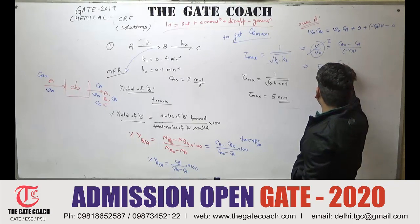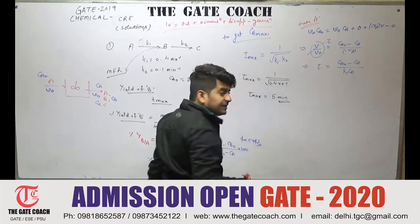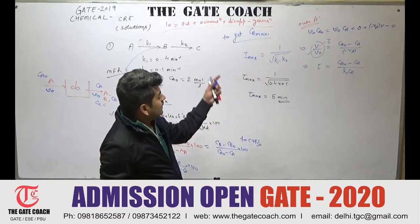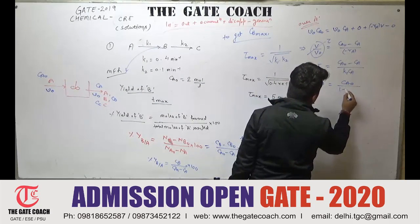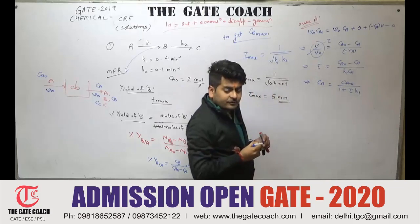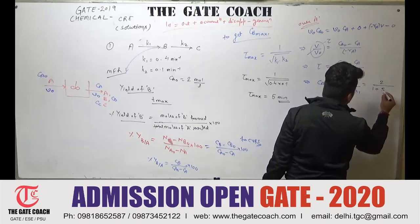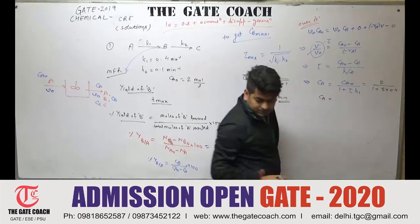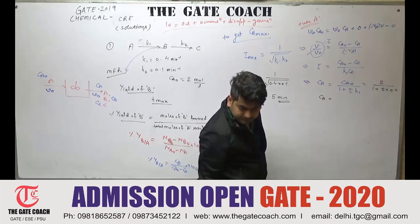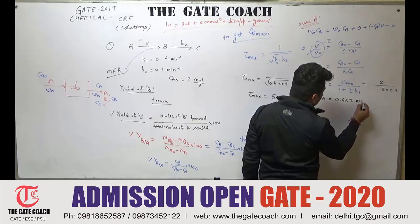For a first-order reaction, −RA = k1 × CA, so CA = CA0 / (1 + tau × k1). Substituting CA0 = 2, tau = 5, k1 = 0.4: CA = 2 / (1 + 5 × 0.4) = 2 / 3 ≈ 0.667 mol/L. (The instructor notes this as approximately 0.5 but the correct computation gives 0.667 mol/L.)